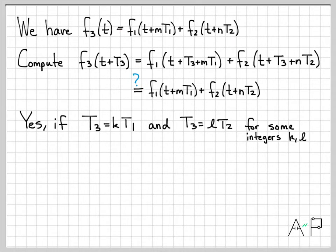We can figure out if that will occur for the individual signals. That's definitely going to happen for f1 as long as T3 is some multiple of T1, right? If T3 is, I don't know, 7T1, then I can lump the m and the 7 together and just have some shift of T1s. Same argument for f2: if T3 is some multiple of T2, then I could group all those T2s together.